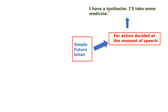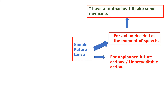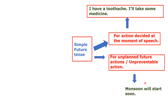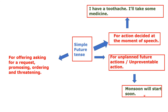The usages of simple future tense: For unplanned future or spontaneous reaction — for example, 'I have a toothache, I will take some medicine.' For natural or unavoidable events — for example, 'Monsoon will start soon.' Other usages include: predictions, offering, asking for requests, promising, ordering, and threatening. Conditionals also use simple future — for example, 'If you go fast, you will catch the bus.'